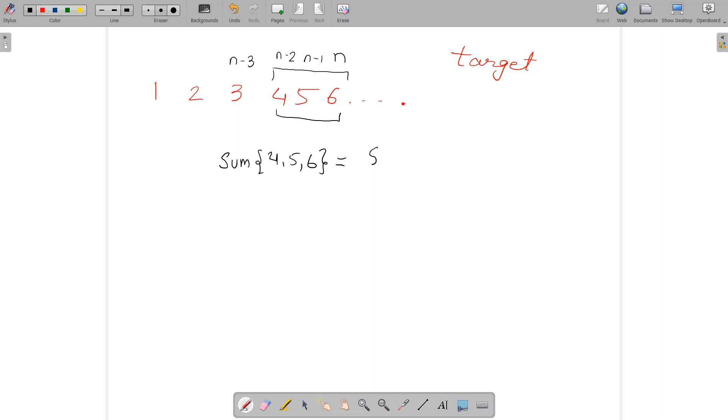If you write down all integers from 1 to 6 where every adjacent difference is exactly 1, then you can see this sum is actually n(n+1)/2 and this sum is actually (n-3)(n-2)/2.